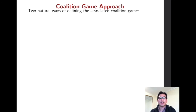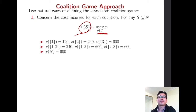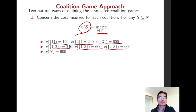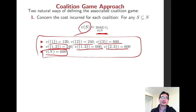Now let's define a coalition game based on this situation. There are two natural ways to define the associated coalition game. The first concerns the cost incurred for each coalition: the characteristic function is the maximum stand-alone cost of the coalition's members. So V({1})=120, V({2})=240, V({3})=600, V({1,2})=240, V({1,3})=600, V({2,3})=600, and the grand coalition also requires 600.